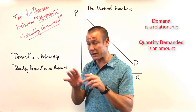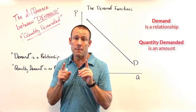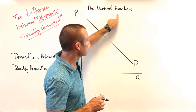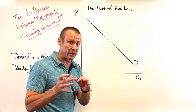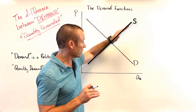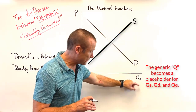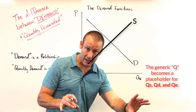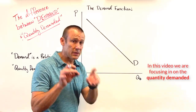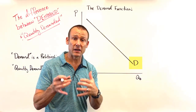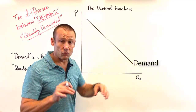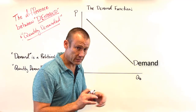Here in a nutshell is the difference: demand is a relationship; quantity demanded is a specific amount. Demand is not an amount — it is a relationship. On the graph, you see price and quantity, and since we're only talking about the demand function here, I'll use QD to show the relationship between price and quantity demanded. We label the entire curve D for demand — never QD — because the whole line represents the relationship between P and QD.